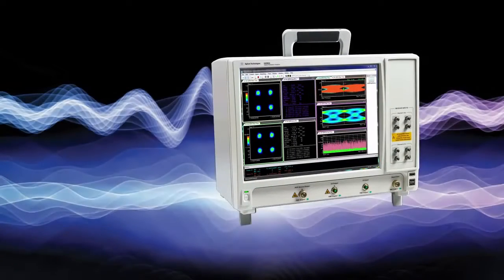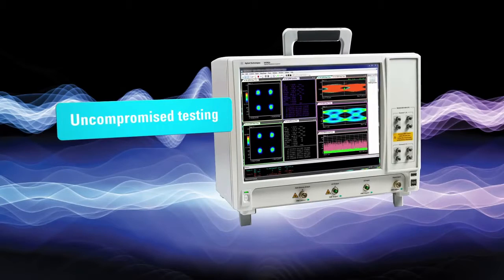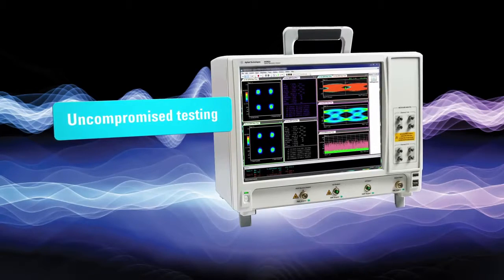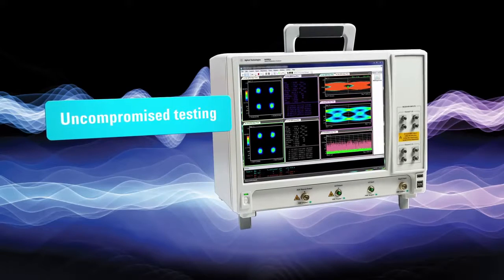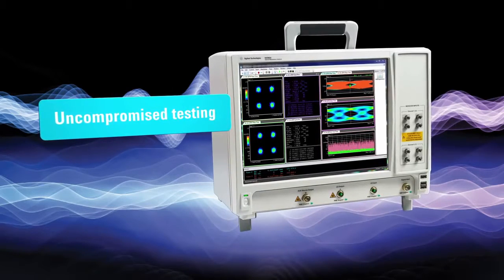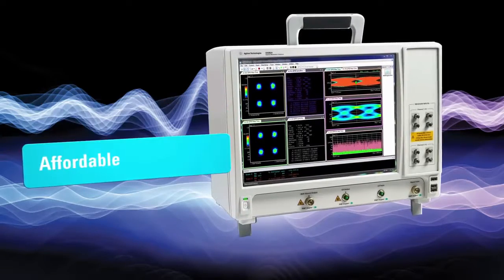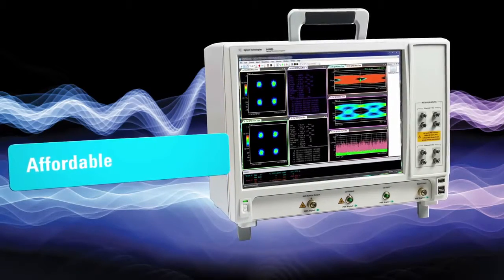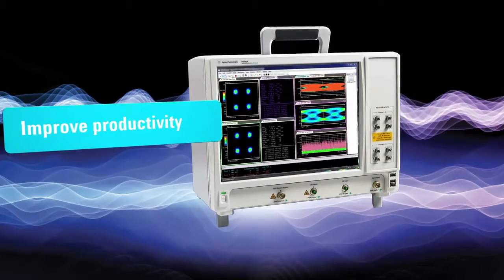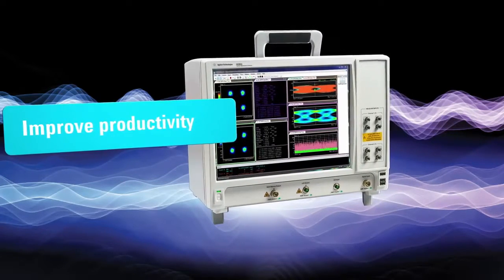The N4392A uses the same high-performance vector analysis software as the N4391A, so you don't need to make any compromises in features. At a fraction of the price of high-end solutions, the N4392A is the optical modulation analyzer of choice for every photonic engineer, a true alternative to the time-sharing of equipment that saps development productivity.